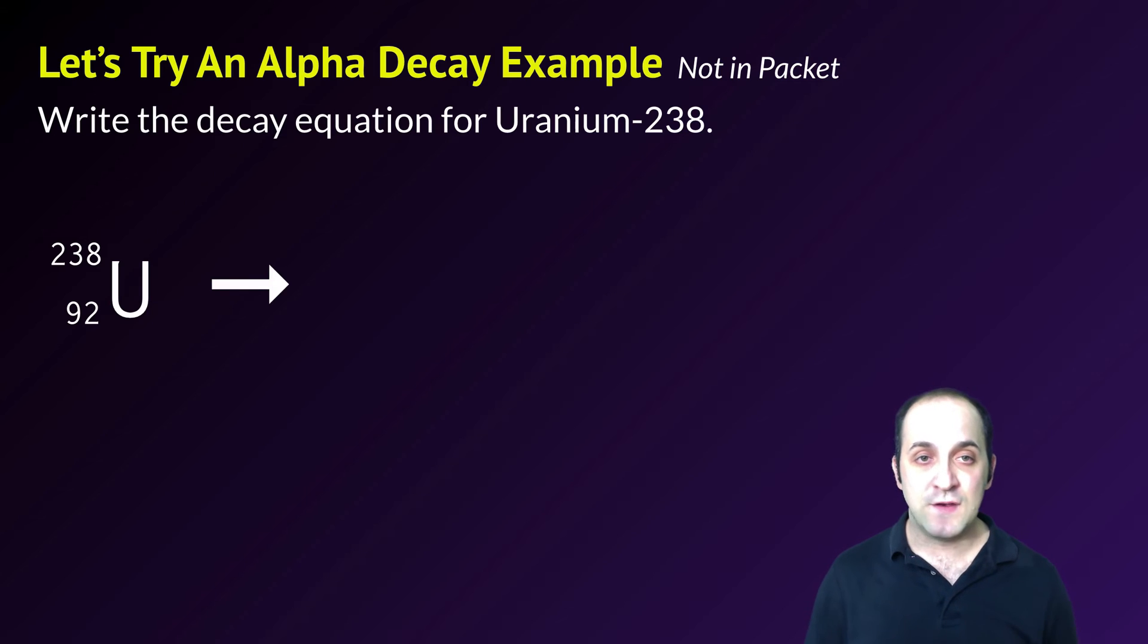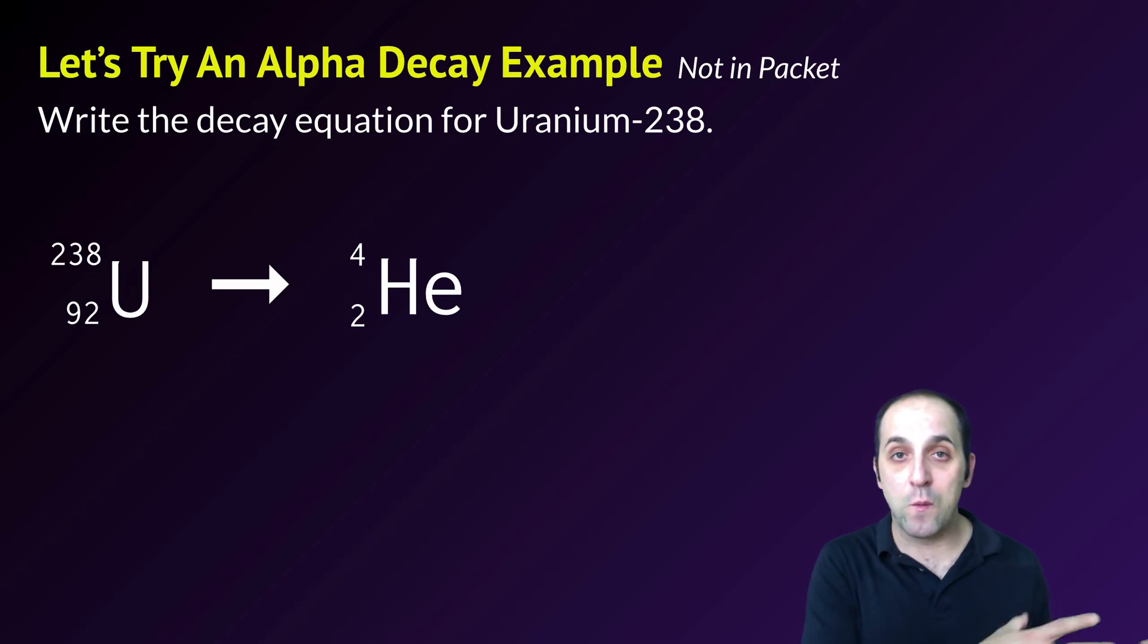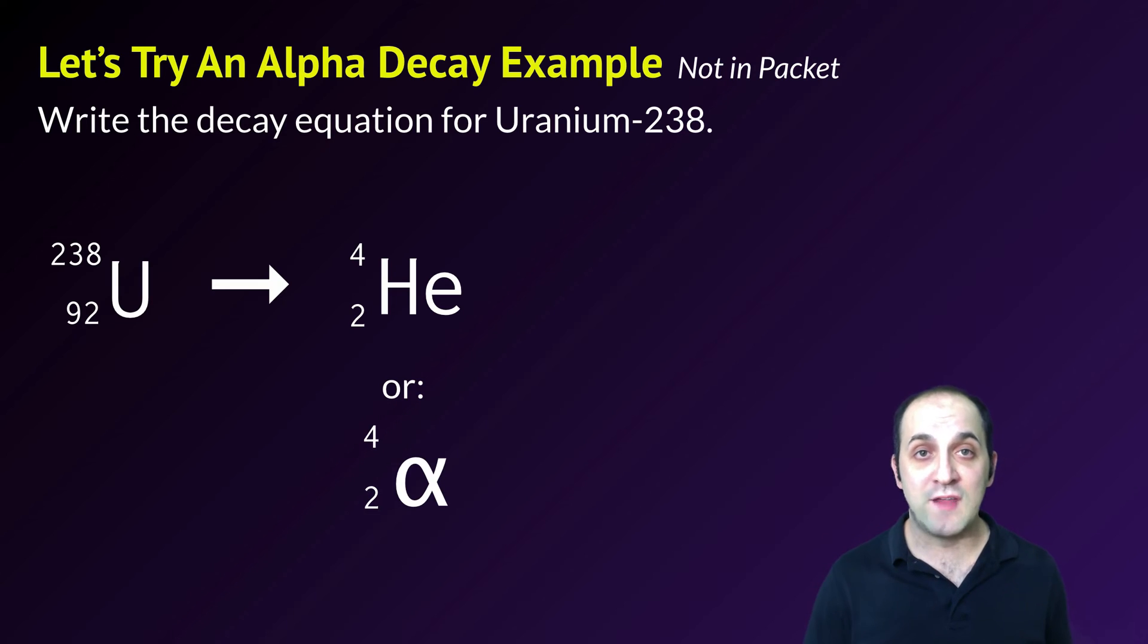Now I know it's going to go through an alpha decay, so I'm going to draw an arrow to represent that this unstable uranium-238 nucleus is going to produce an alpha particle. This is what an alpha particle looks like - it's got the same composition as the nucleus of a helium-4 atom. There are two ways to write alpha decay that are both acceptable. You can use either one, just pick one and use it.